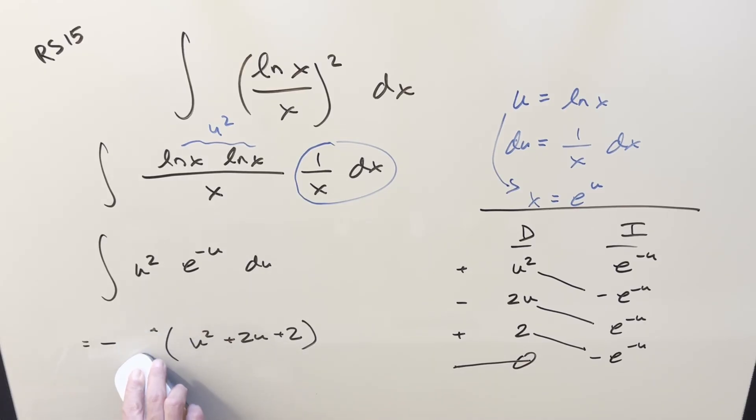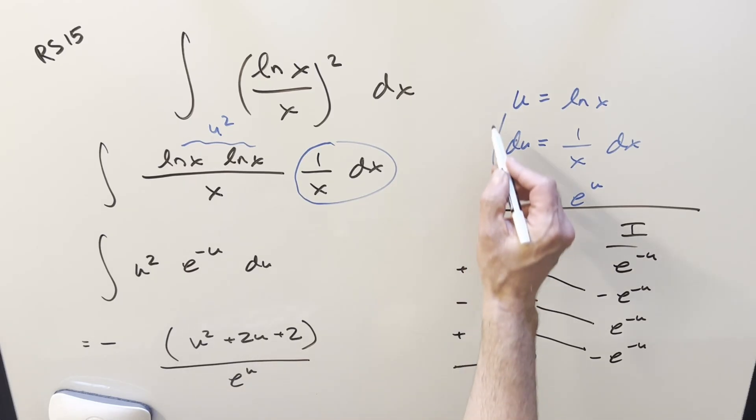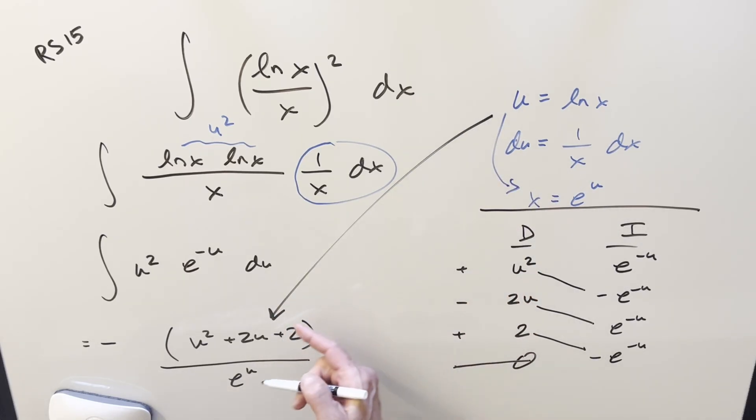And now we're about ready to back substitute. One thing, actually, let's bring this into the denominator just to make it clear. So instead of writing e to the minus u, let's write it as all over e to the u. We'll take our u value and back substitute. But we also have e to the u equals x.